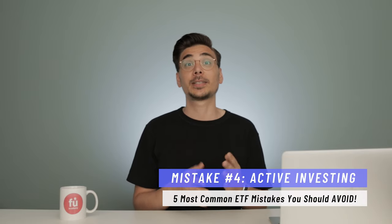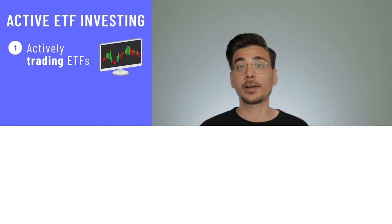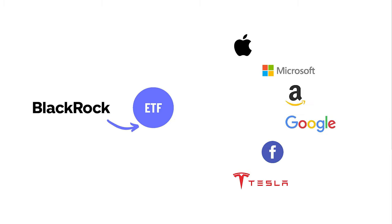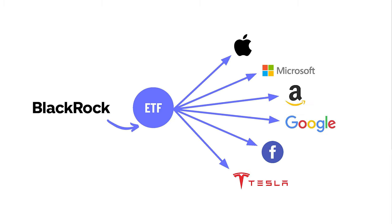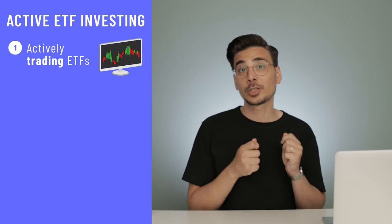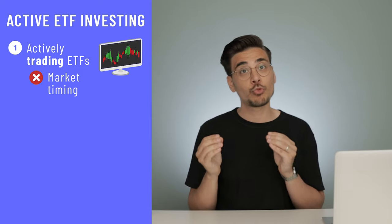Mistake number 4 in ETF investing is moving towards active investing, which can happen in two ways. The first is to actively trade ETFs. By default, an ETF is a passive product that tracks an index — a fund provider like BlackRock buys all the stocks of the S&P 500 to replicate it. But because you can buy and sell ETFs so easily, it's tempting to use them for active trading, which is essentially market timing. You can get market timing right, but there is a much higher chance you get it completely wrong and miss out on some really good trading days.